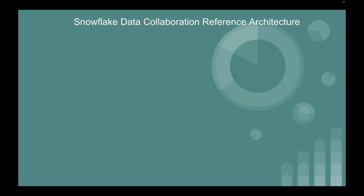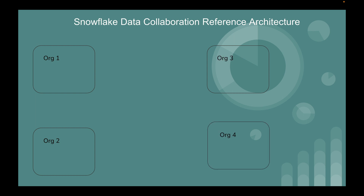On the next slide we will look at the collaboration reference architecture. The scenario is that you have three, four, or five organizations that want to participate in data collaboration. For example, suppose you have Organization 1, Organization 2, Organization 3, and Organization 4 — four organizations that want to collaborate. Organization 1 wants to share some data with Organization 3, and Organization 4 wants to get data from Organizations 1 and 2.